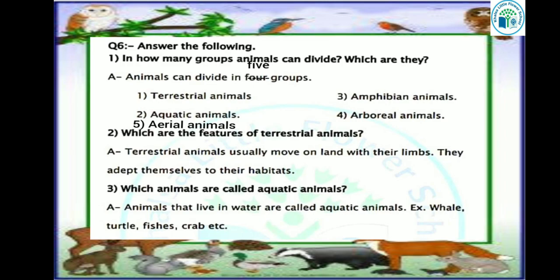Our next question is: which are the features of terrestrial animals? The animals that live on land — what are their features? Terrestrial animals usually move on land with their limbs. They adapt themselves to their habitats. They walk on land with the help of their legs and adjust themselves to their habitat.